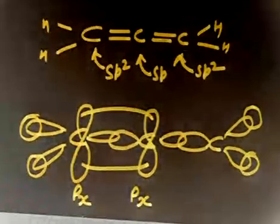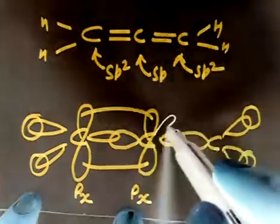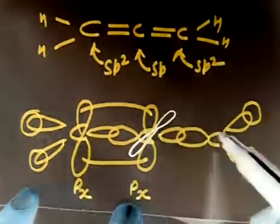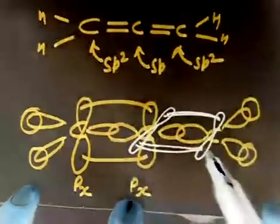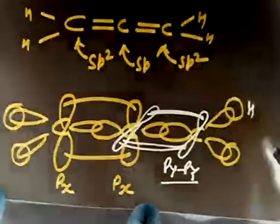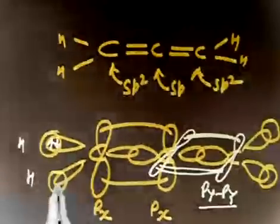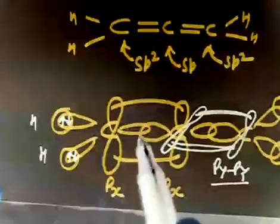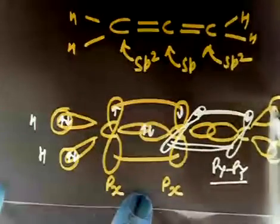Now here we have one lobe that is the py orbital — so next we will have the py-py overlap. Let us say py is perpendicular to this plane and we will have this overlap — that is a py-py overlap. These are the hydrogen atoms. All these overlapping orbitals have two electrons; if I am not showing two electrons you have to understand there are two electrons. This contains one electron, this one electron, this one electron, one electron, two electrons — so one electron, one more electron.